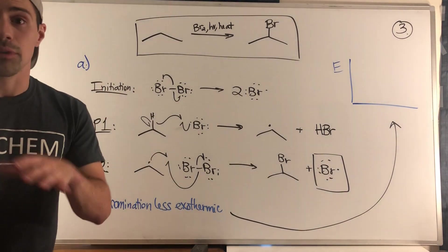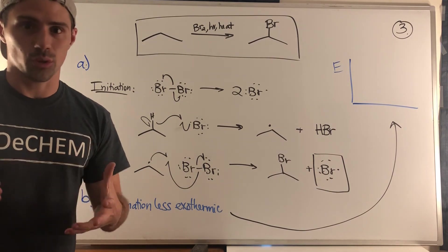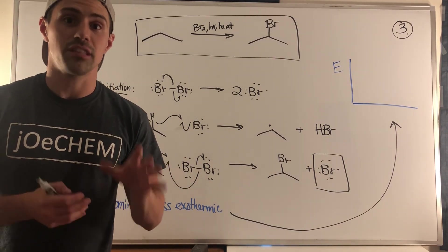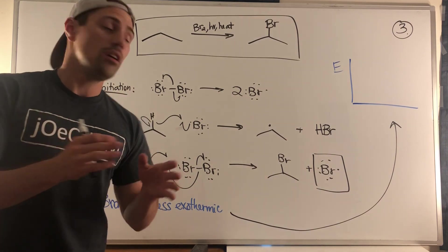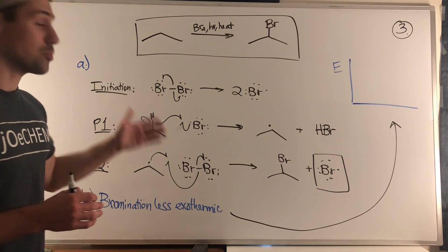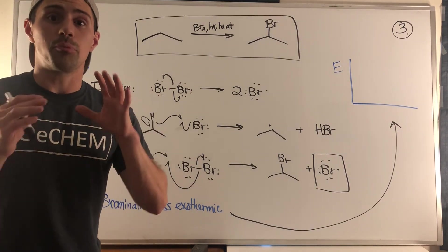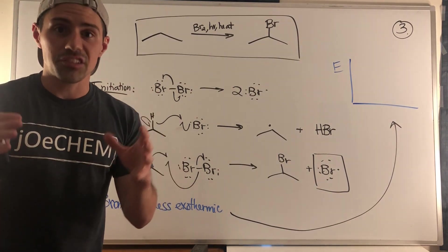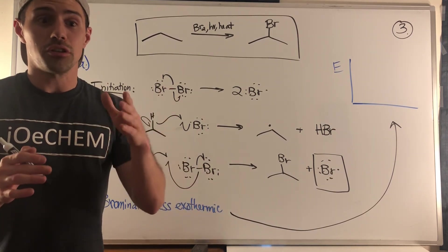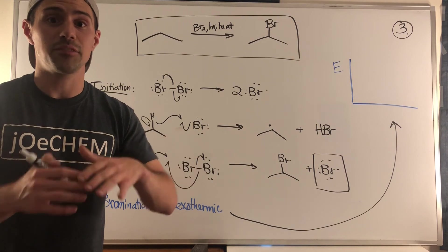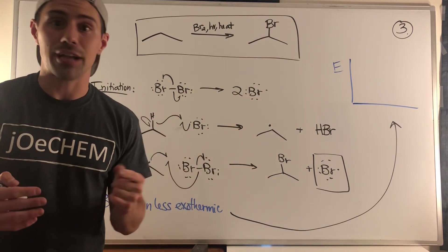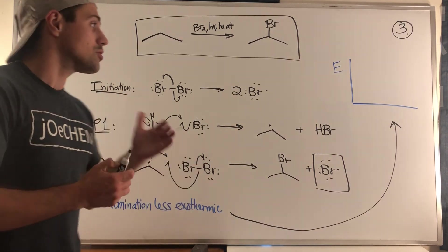For B, why is bromine more selective than chlorine? Remember, it comes down to the fact that you can look at the bond dissociation energies. If you actually calculated the enthalpy for the steps in P1 and P2, you actually see that one of the steps for bromine is endothermic. The bromination reaction is less exothermic. It doesn't happen as rapidly as the chlorination reaction. It putters along.